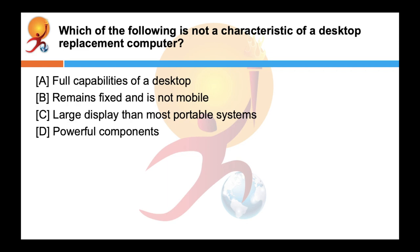Which of the following is not a characteristics of a desktop replacement computer? Correct answer is B remains fixed and is not mobile. Unlike desktop, the desktop replacement computer has full capabilities of a desktop computer but is not mobile. They are in the category of bulkier laptops.